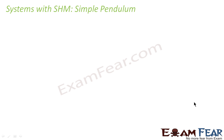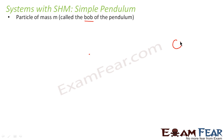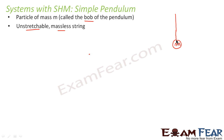So first let us understand when is a system called a simple pendulum. A simple pendulum is a system which consists of a particle of mass m, which is called the bob of the pendulum. There has to be a massless and unstretchable string, and a pivot point — the fixed point from which the string is hanging.